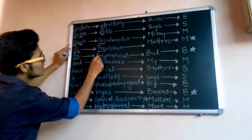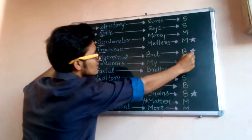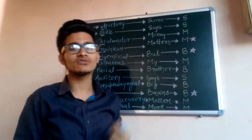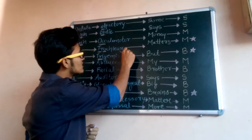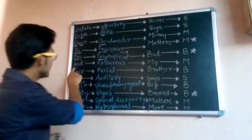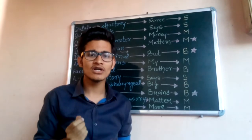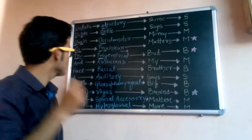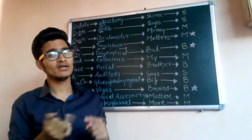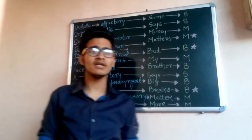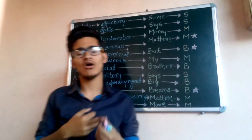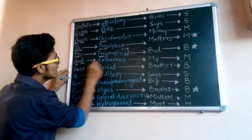Trochlear and trigeminal are both star-marked, meaning they have something special. The trochlear nerve is the smallest cranial nerve in our body. The word 'trigeminal' contains 'tri,' which means three — so the trigeminal nerve divides into three other nerves: ophthalmic, maxillary, and mandibular. After trigeminal comes 'and,' which means abducens.